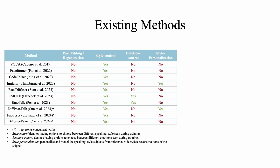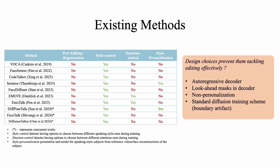Existing state-of-the-art methods leverage 3D audio-visual datasets to enable quicker multimodal synthesis with control over speaking style and emotion. However, they cannot allow users to easily edit specific parts of the animation sequence. Design choices like Autoregressive Decoder, Lookahead Mask, Non-Personalization, and using standard diffusion prevent them from tackling this issue effectively.